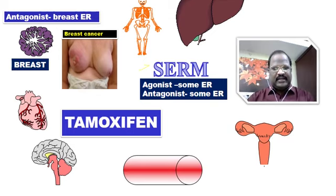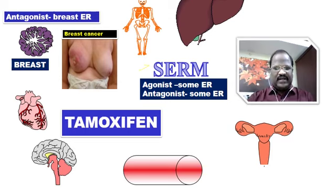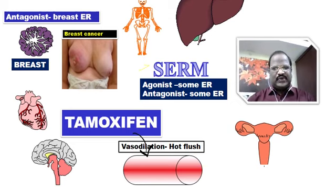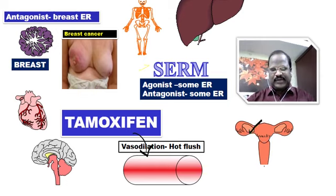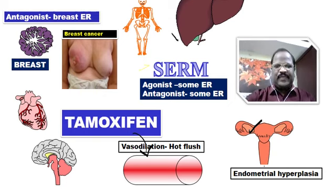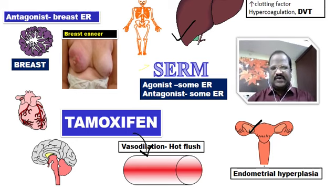But look at the extra points. Tamoxifen has agonistic action on other estrogen receptors. When tamoxifen acts as an agonist on estrogen receptors of blood vessels, it causes vasodilation, thereby causing hot flushing. Tamoxifen also has agonistic action on endometrial estrogen receptors, thereby causing endometrial hyperplasia. And tamoxifen has agonistic action on liver, thereby promoting synthesis of clotting factors, causing hypercoagulation resulting in deep vein thrombosis.